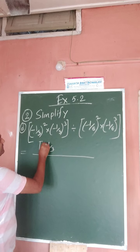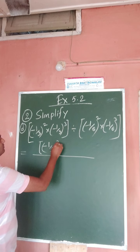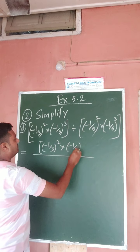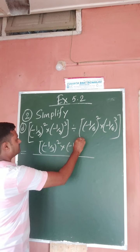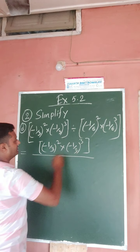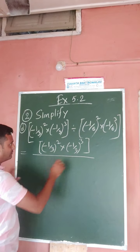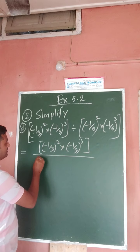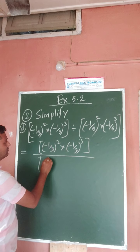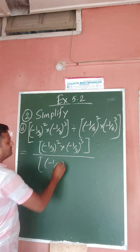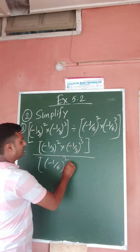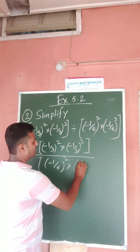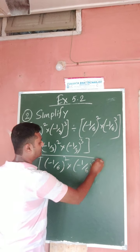So we rewrite: minus 1 by 3 whole square into minus 1 by 3 whole cube, divided by minus 1 by 6 whole square into minus 1 by 6 whole cube.